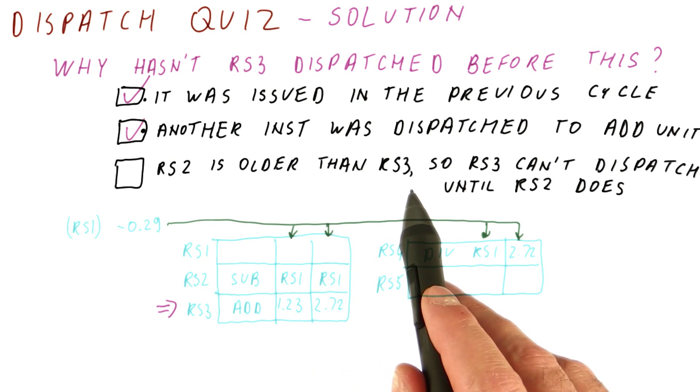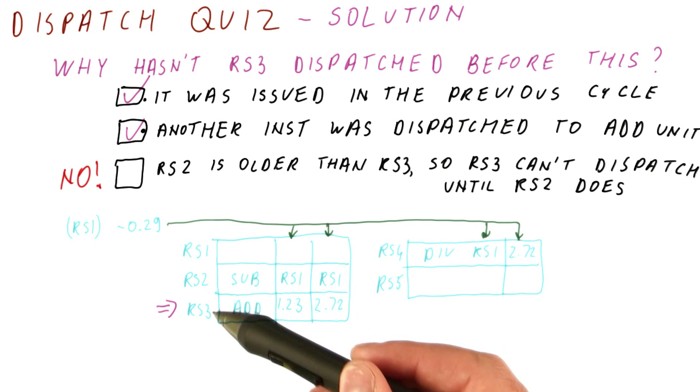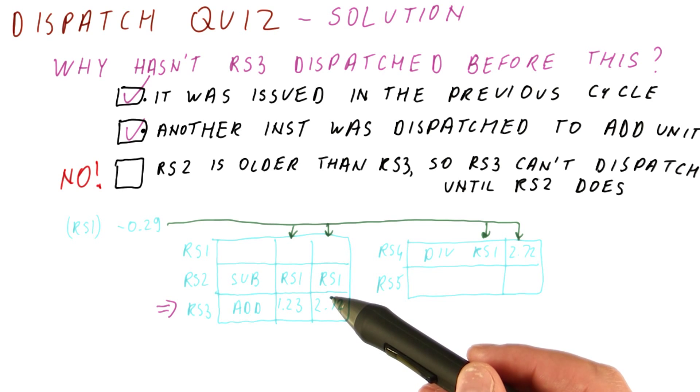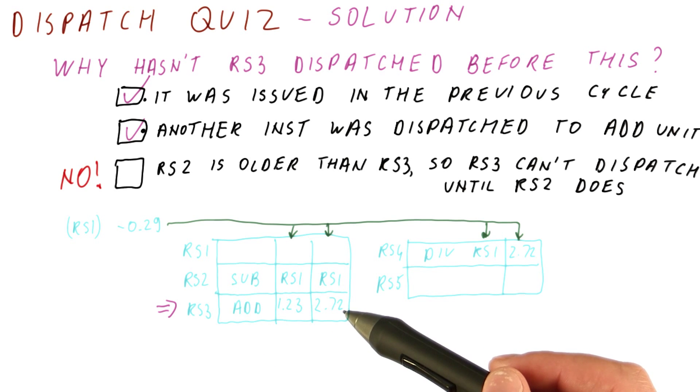RS2 is older than RS3, so RS3 cannot dispatch until RS2 does. This cannot be correct because in out-of-order execution, and Tomasulo's algorithm is one of the out-of-order algorithms, we will dispatch an instruction as soon as its operands are ready.